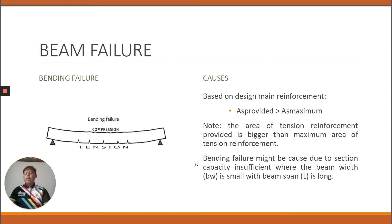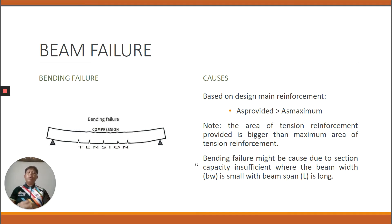Bending failure occurs under the ultimate limit state design when we have already calculated the maximum load and maximum shear force of the beam. We design the structure by providing the area of reinforcement. Normally we face this failure when the area we provide for the reinforcement is more than the area of the maximum.